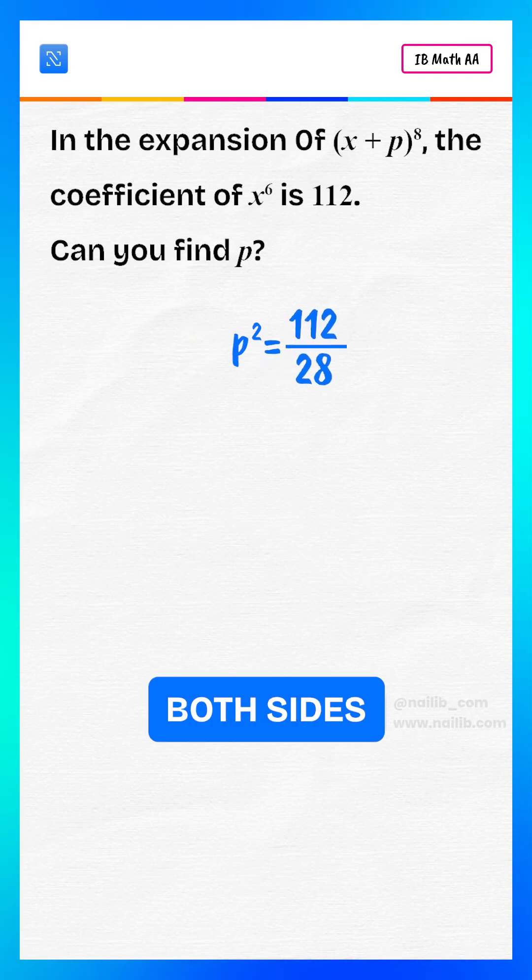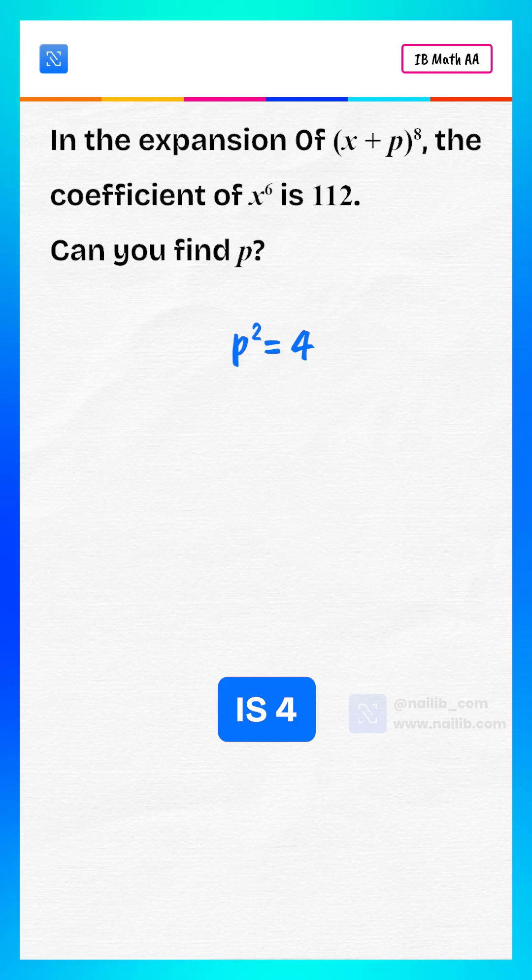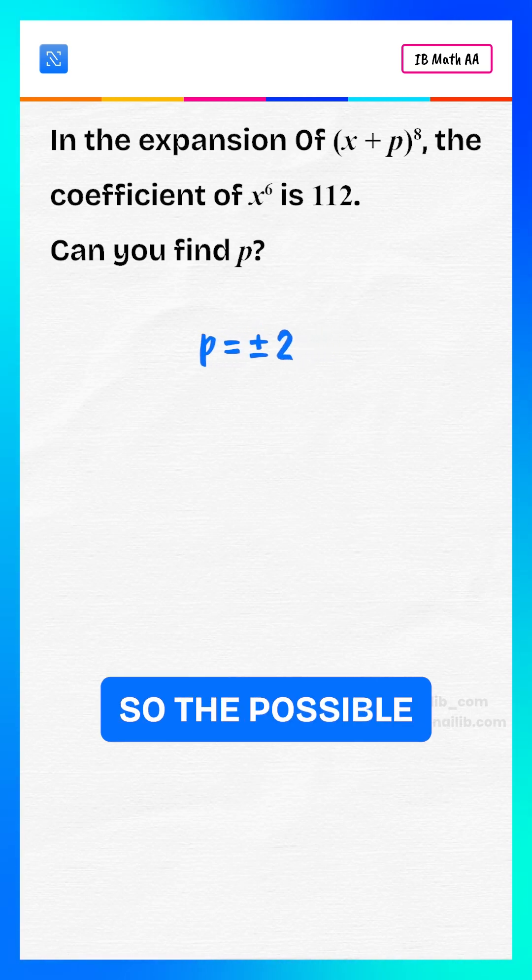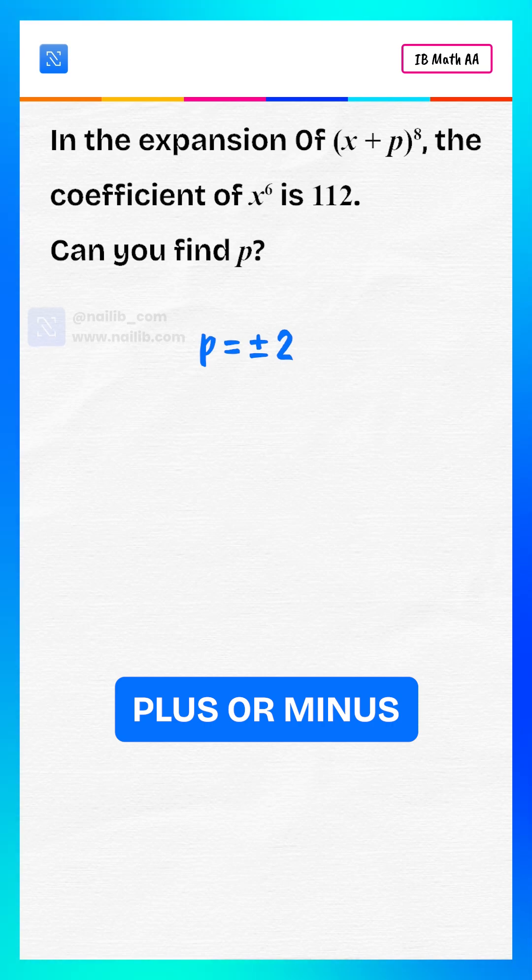Divide both sides by 28. p squared is 4. That means p is plus or minus 2. So the possible values of p are plus or minus 2.